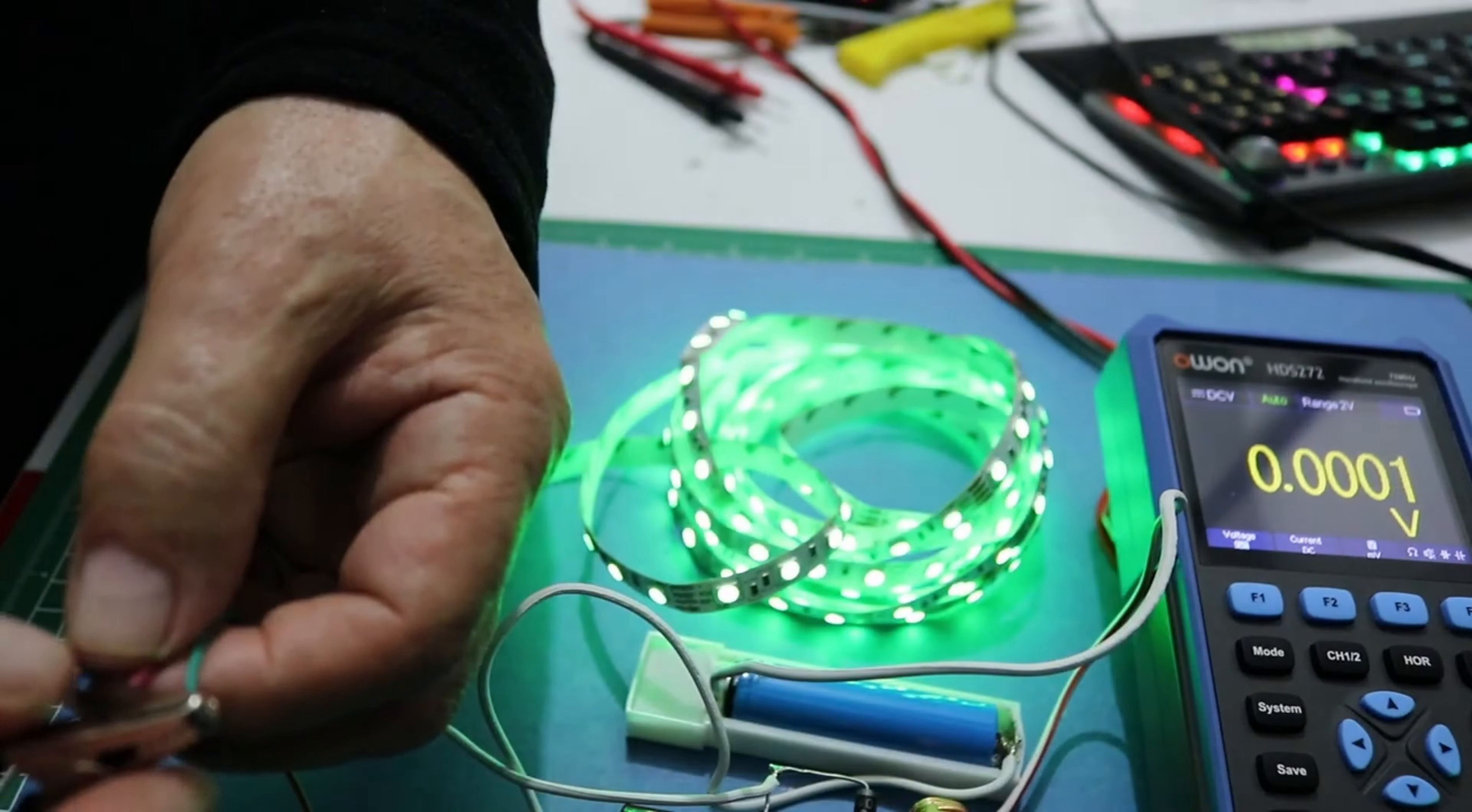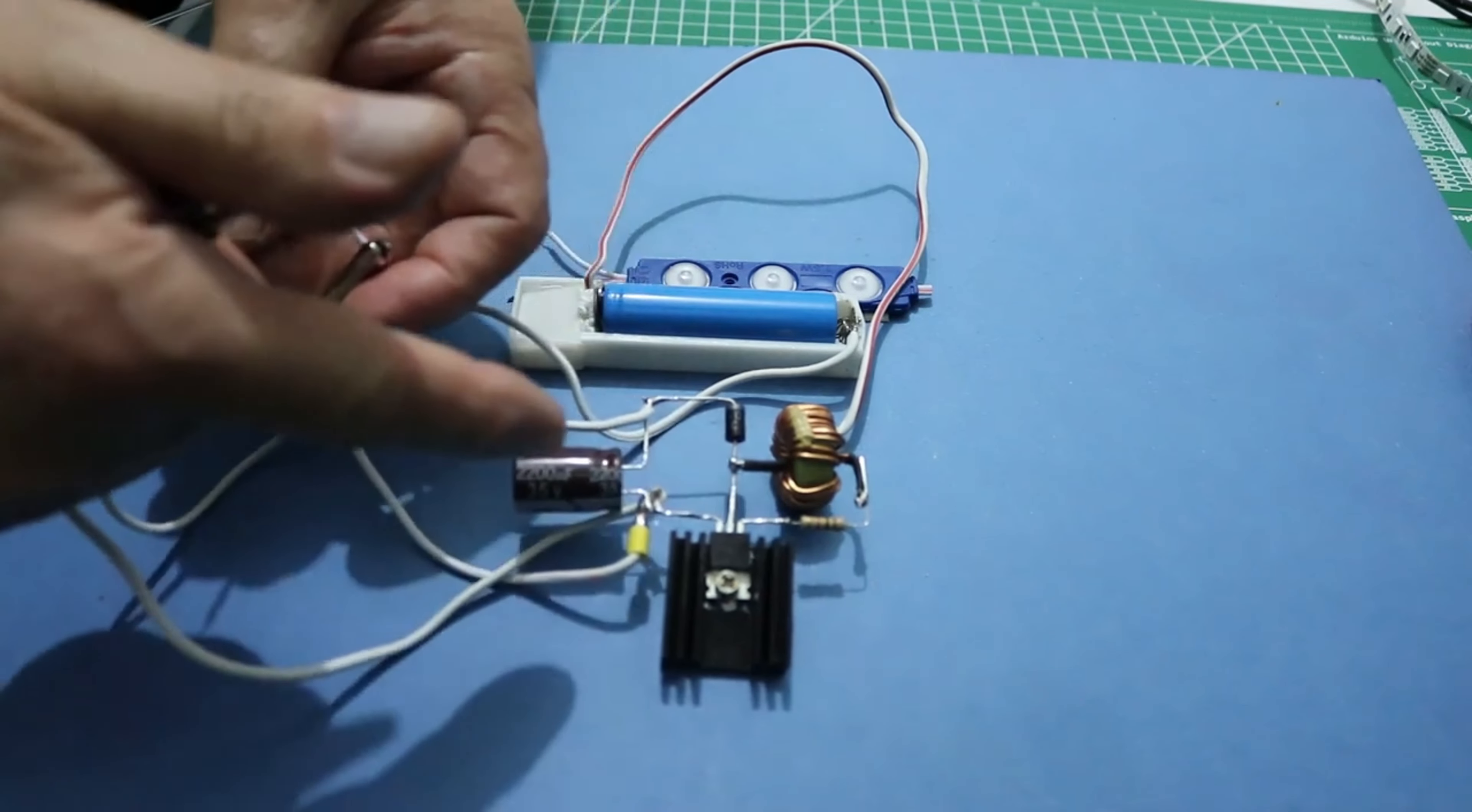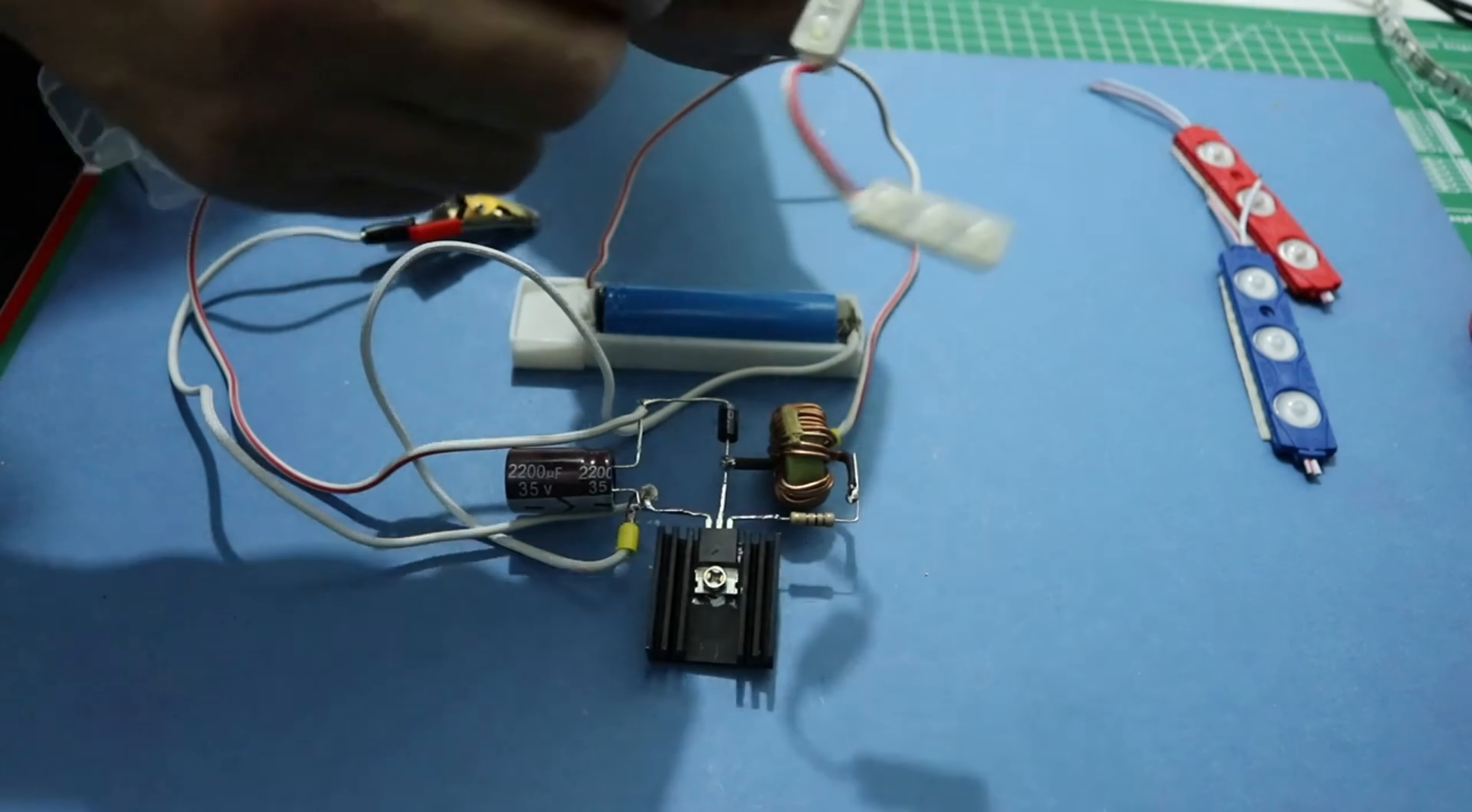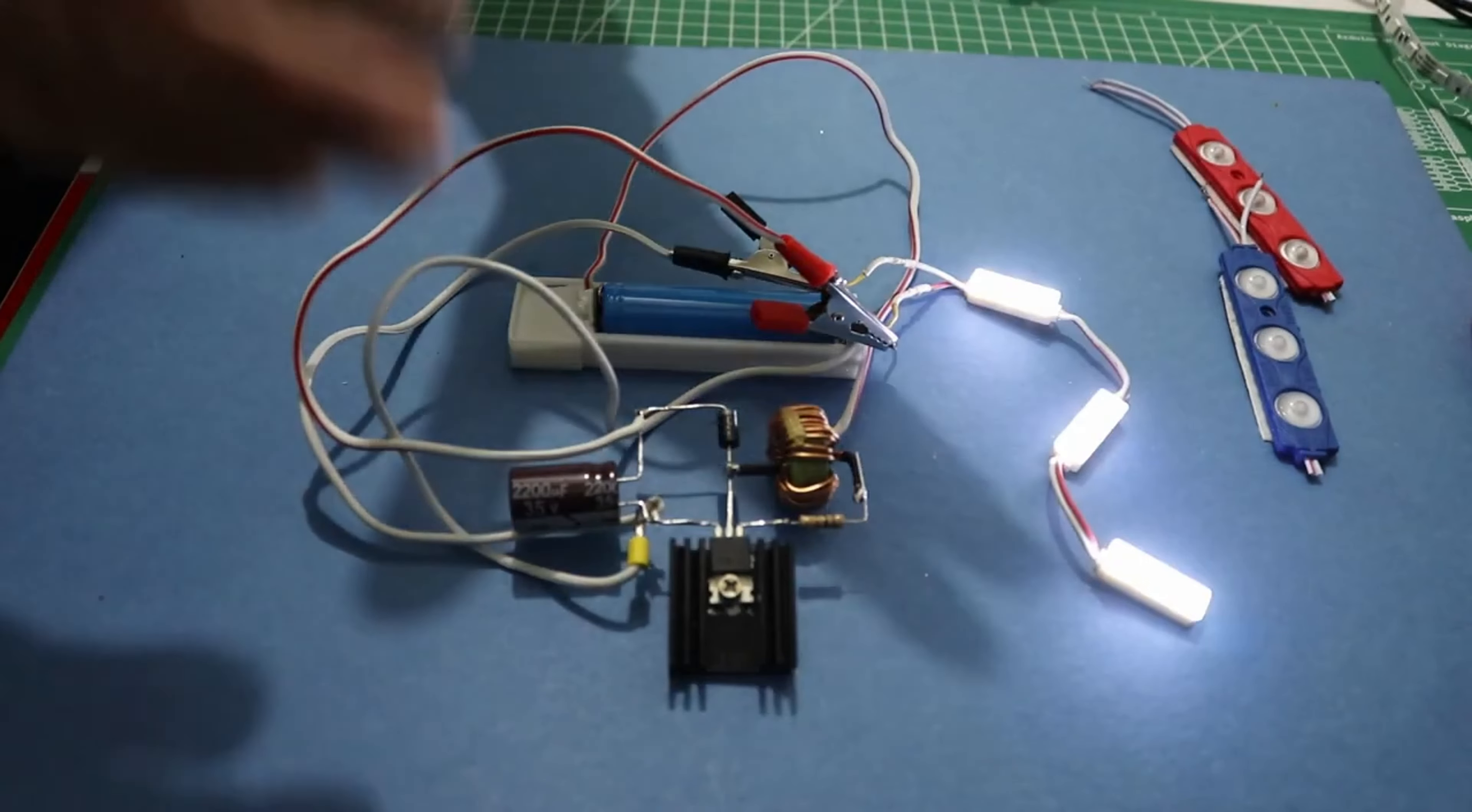This is a basic DC-DC booster circuit using the components you provide. Please note that this is a simplified description and real-world applications may require additional details and testing. Always use caution and follow electrical safety practices when working on such projects. Also consider the safety precautions for the 18650 battery you will use.